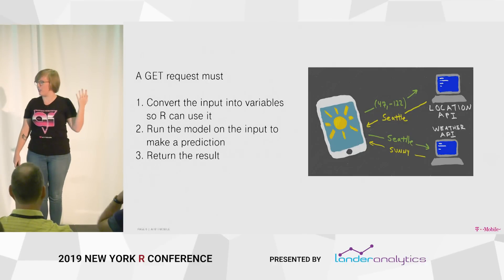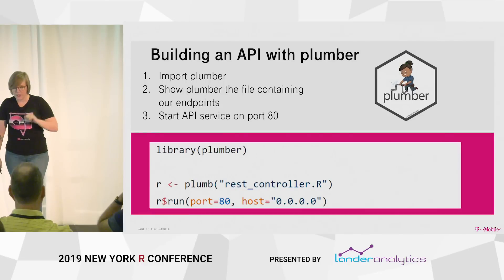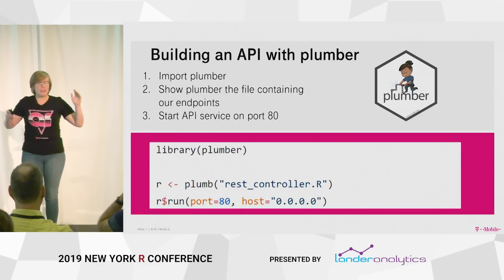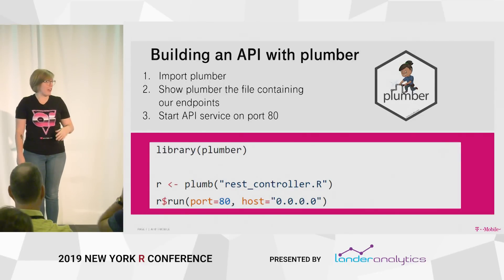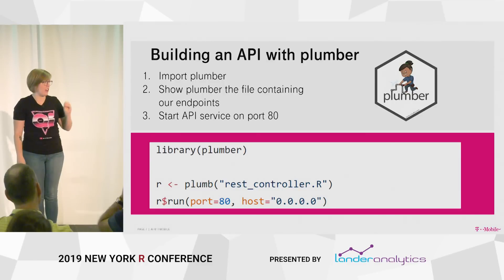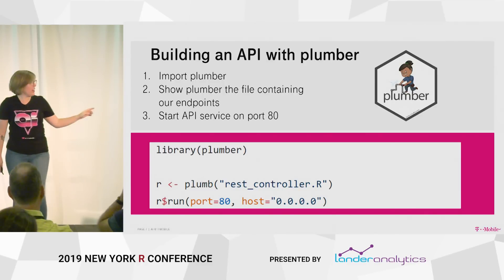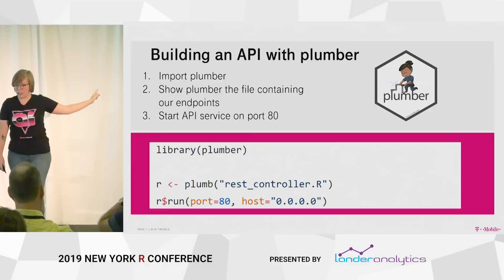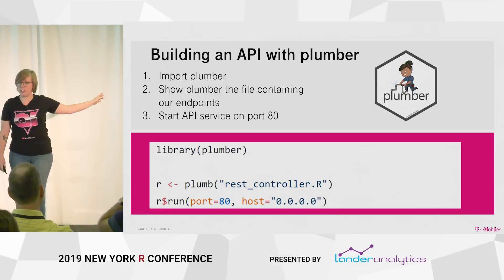So when engineers say it and they talk really lofty, they're all lying to you. It's not that complicated. And we do that with Plumber, which is a package developed by RStudio that is literally the easiest thing in the entire world. It takes these three lines of code — that's all it takes to make what Jacqueline put on the screen yesterday into an API.